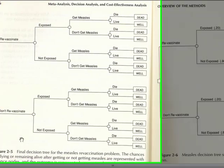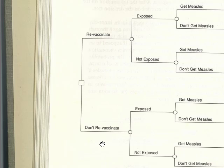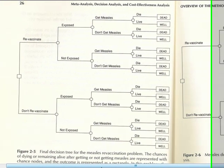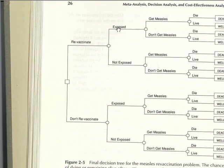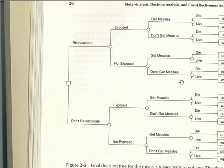Based on these components, we have this decision tree for the problem of whether to re-vaccinate or not. Once we have this decision tree, the next task is to enter the probability values. For example, when we re-vaccinate, some get exposed and some don't — so we enter the probability of getting exposed and not getting exposed, the probability of getting measles or not, and once they get measles, the probability that they die or live. This is what decision analysis and the decision tree is all about.